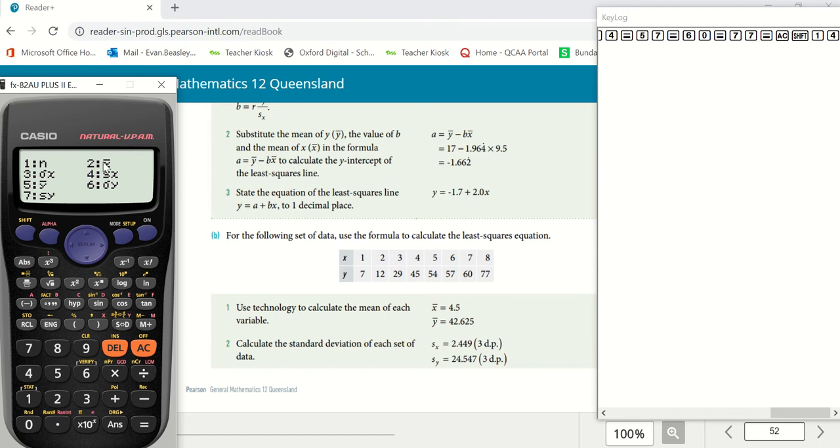So if we go mode four, you can see here we've got the number of scores, the mean of the x values, the mean of the y, the standard deviation of the x, and the standard deviation of the y.